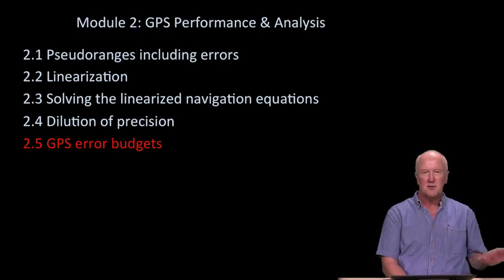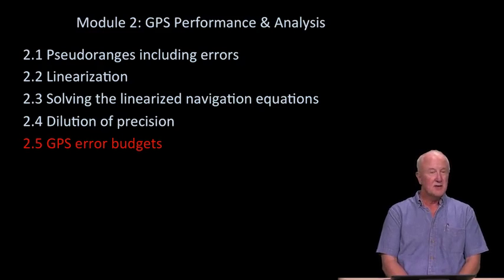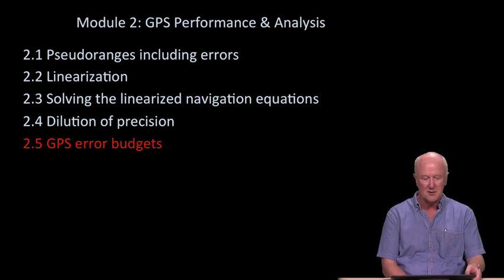And we did that both for the pseudo-range measurements, we called that sigma tau, and we did it for the position estimands: sigma east, sigma north, sigma up, sigma time. And those latter sigmas characterized the variance or the standard deviation of the error in east, north, up, and time. What we're going to do now is talk a little bit more about sigma tau. Having done that, we'll pull all the data together into a thing called the error budget, which is nothing more than a table that contains really all the information we've talked about so far.